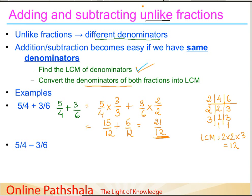So twenty-one by twelve is the answer we got, and this is how we add unlike fractions. Now let us take an example for subtraction as well. We have to do five by four minus three by six, that is subtract three by six from five by four. We proceed as before: for four and six, the LCM is twelve, as we already calculated.